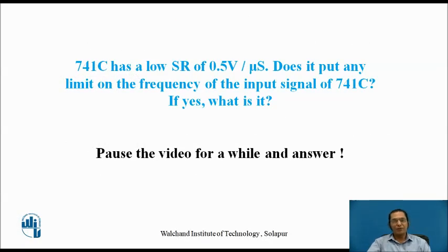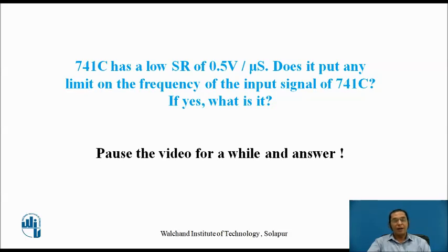Dear student, let us pause the video and answer this question. The 741C has a low slew rate of 0.5 volts per microsecond. Do you think this puts any limit on the frequency of the input signal for the 741C? If yes, what is that limit? Please calculate it by assuming certain values for the positive and negative saturation voltage of the op-amp output, and determine the frequency limit for signals used with the 741C.